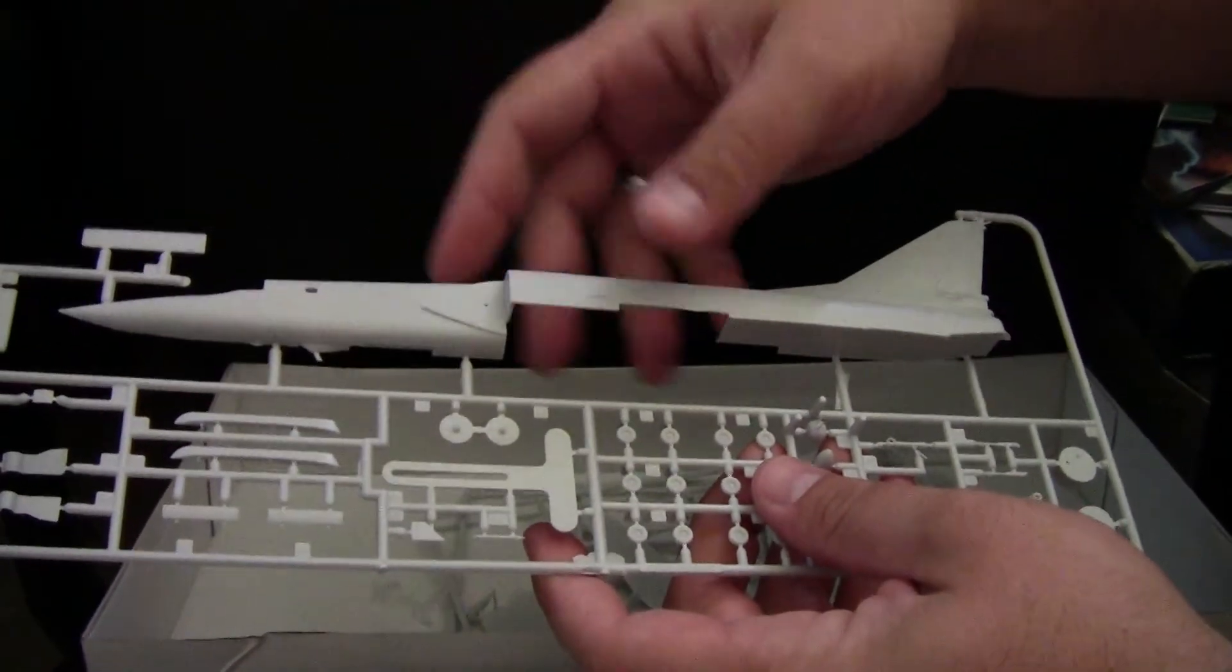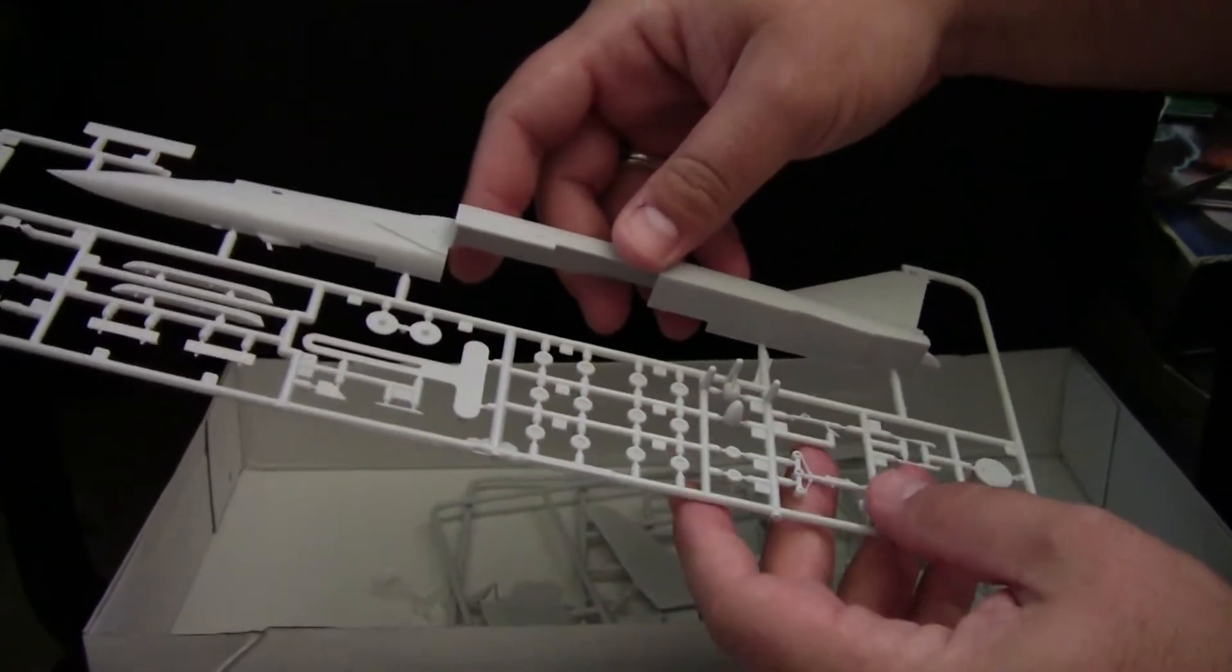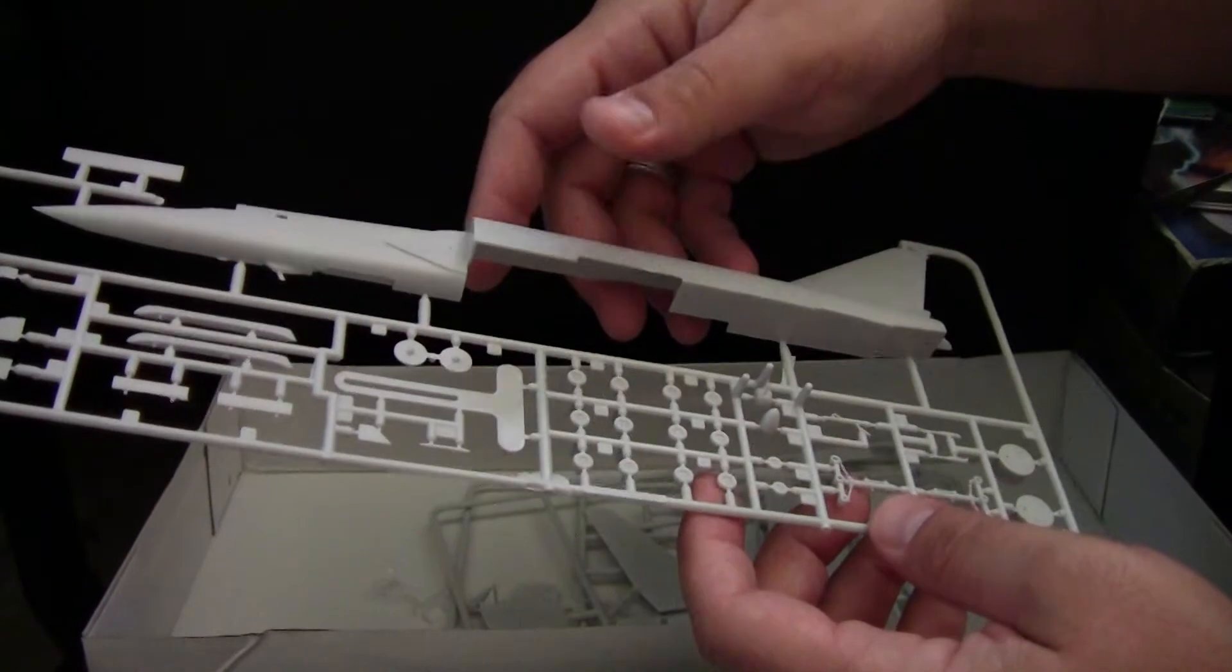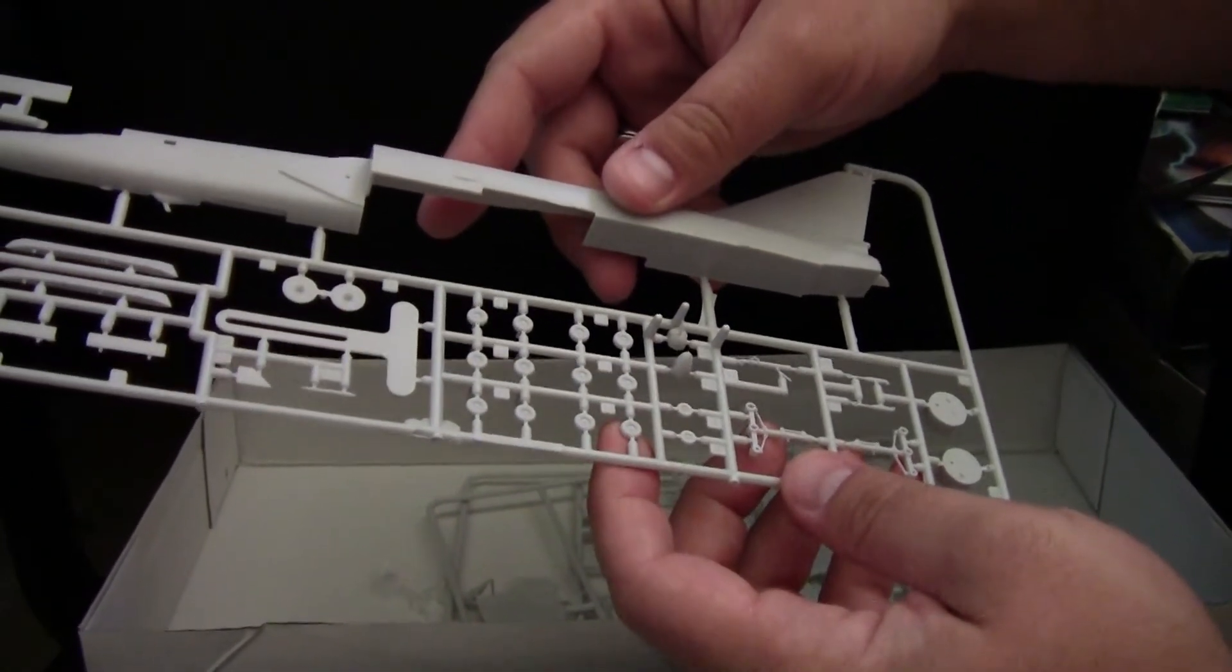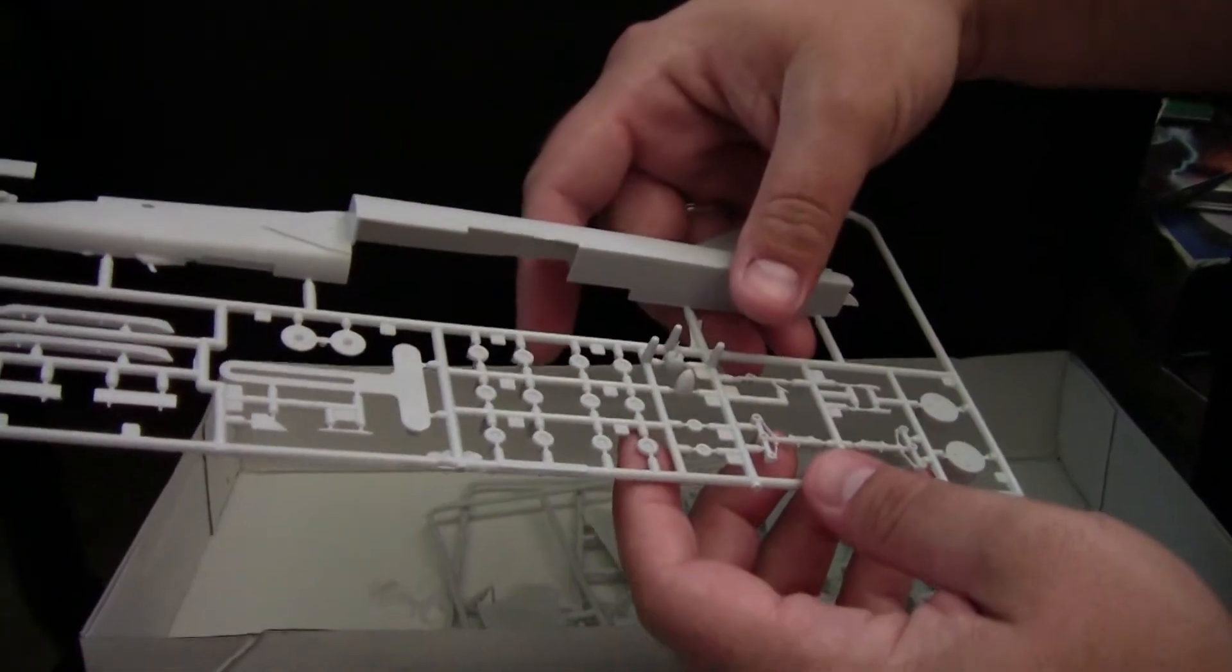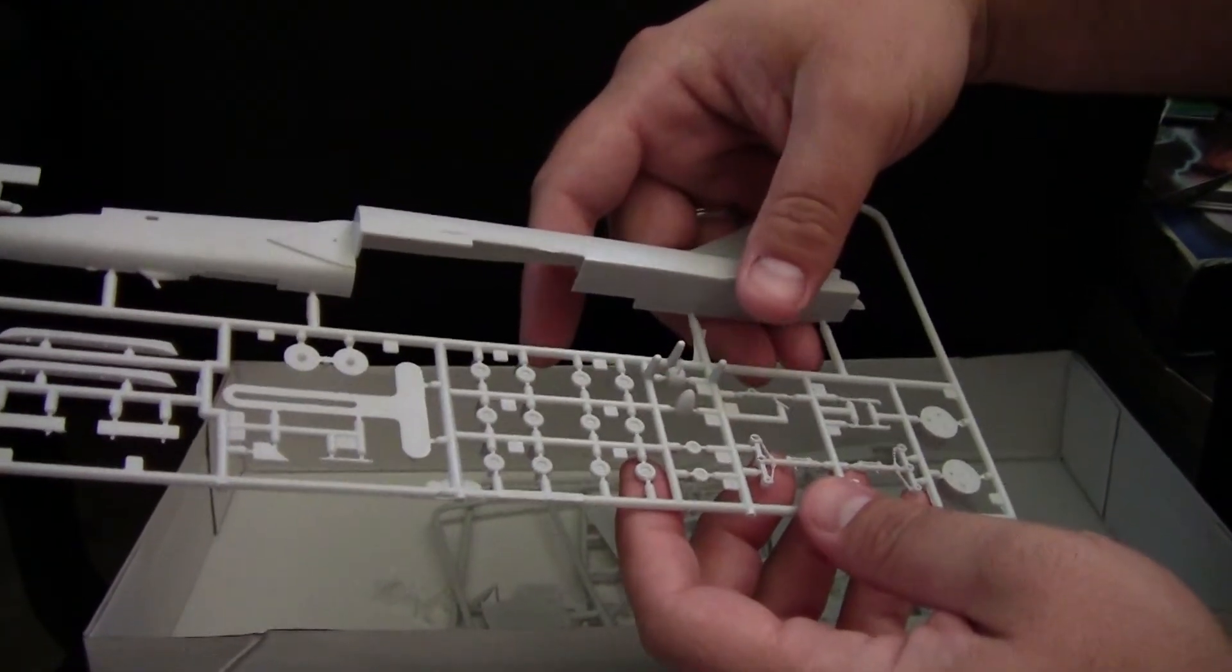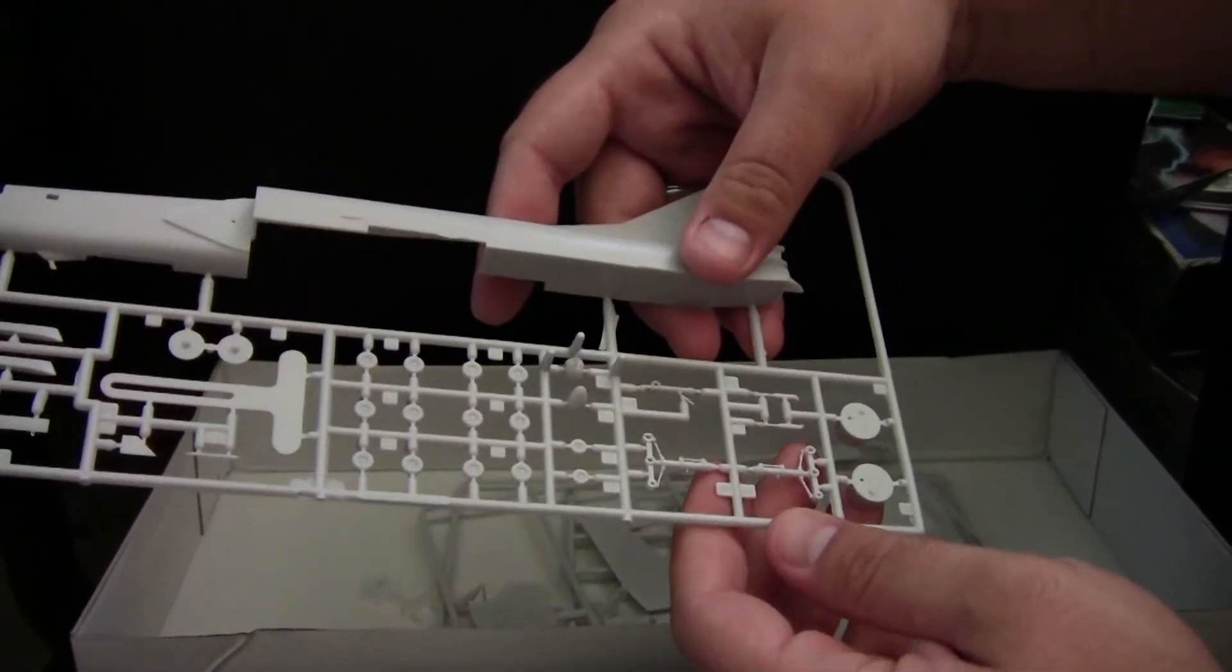Continuing on, we've got our next fuselage halves, as well as the landing gear and wheels. The wheels themselves are pretty lacking in detail, but again, it's a 1:144 scale kit, so there's not a whole lot to see there.